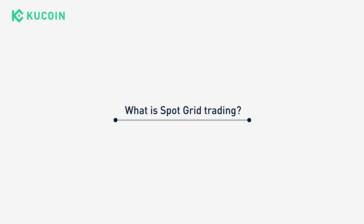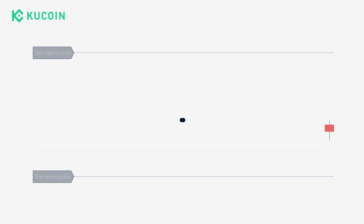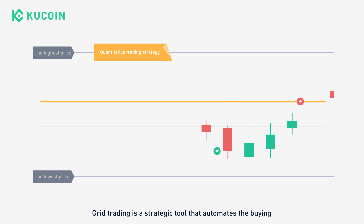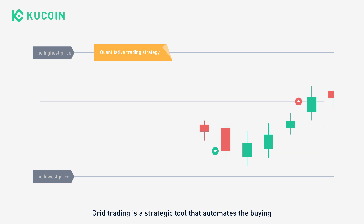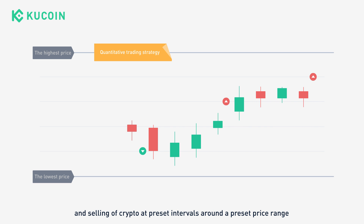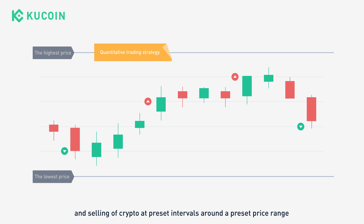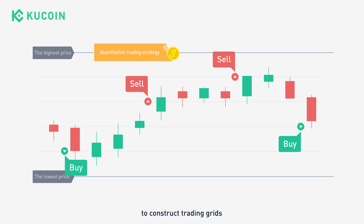What is grid trading? Grid trading is a strategic tool that automates the buying and selling of crypto at preset intervals around a preset price range to construct a trading grid.